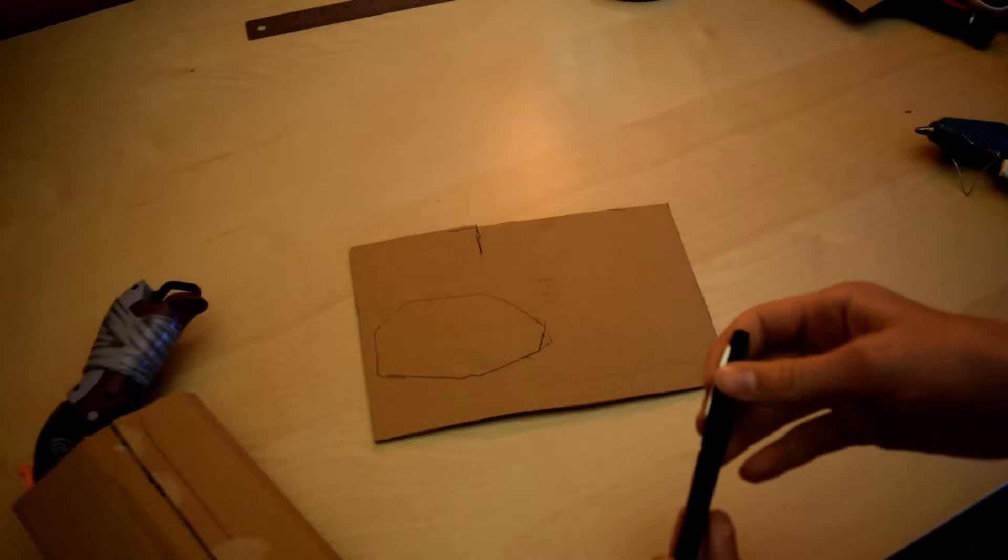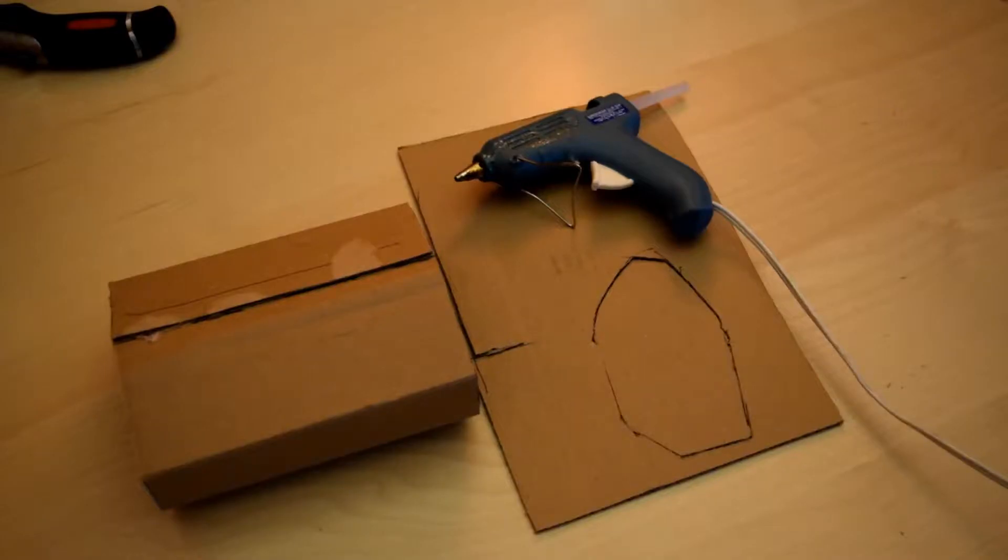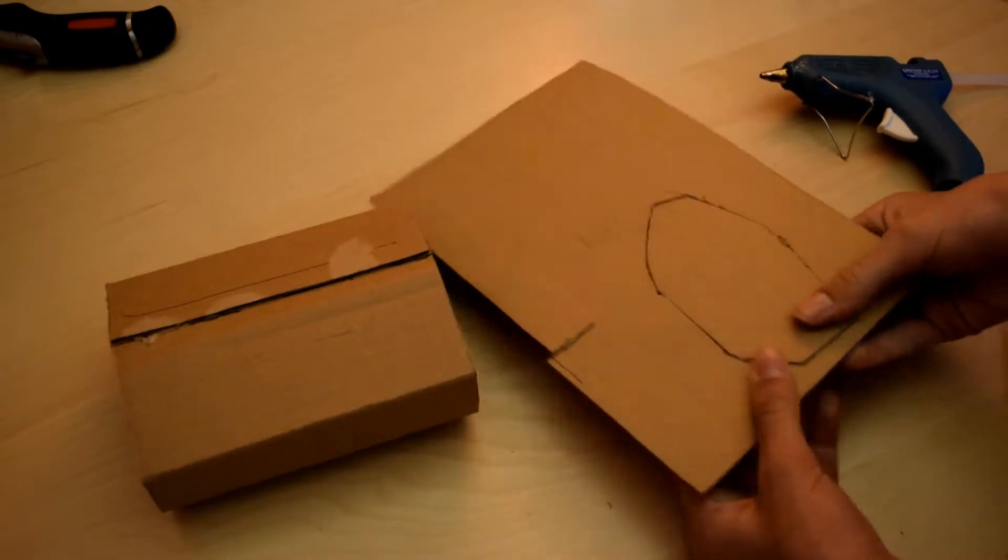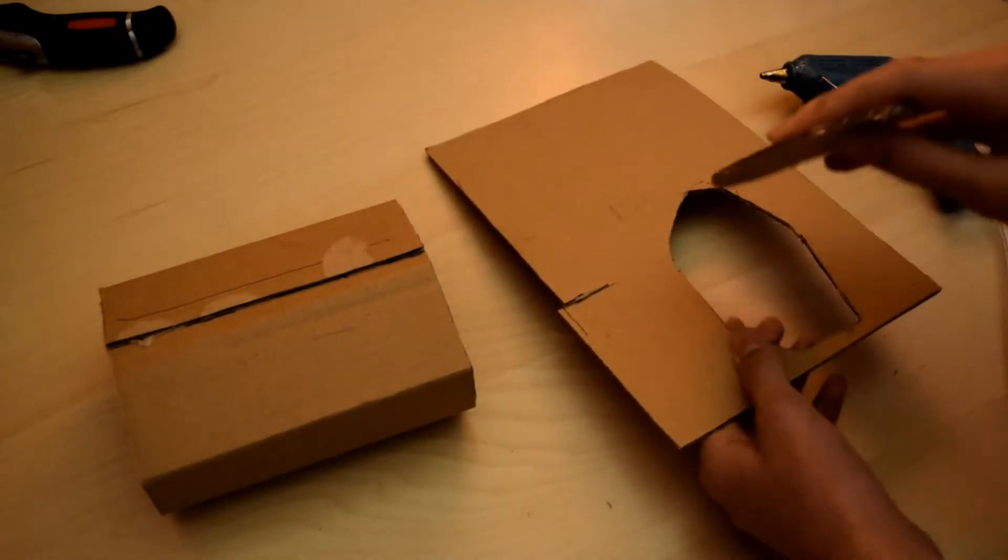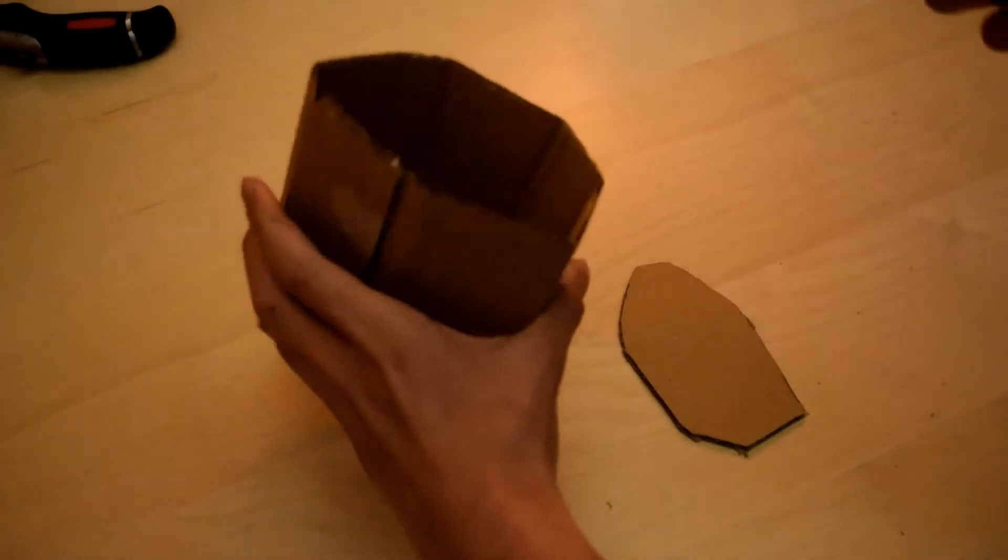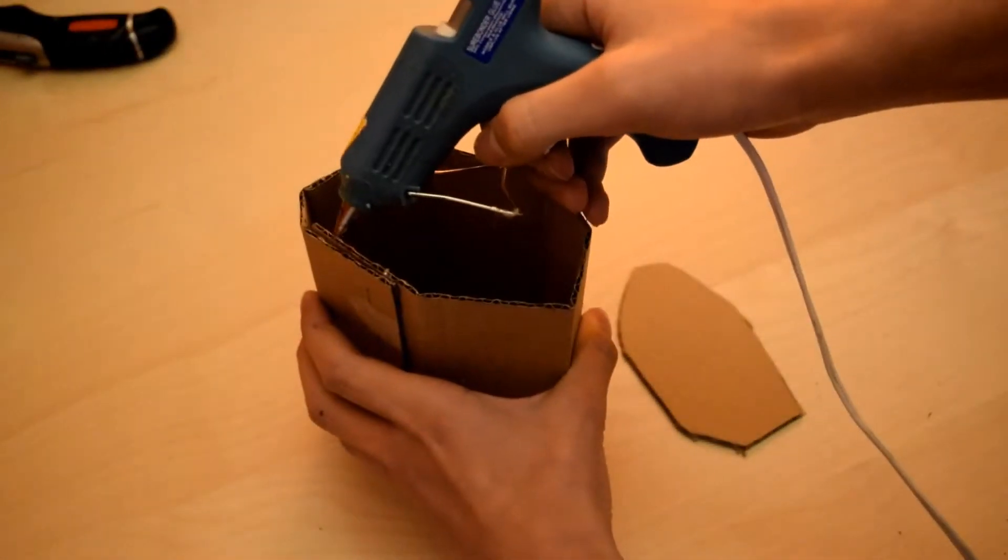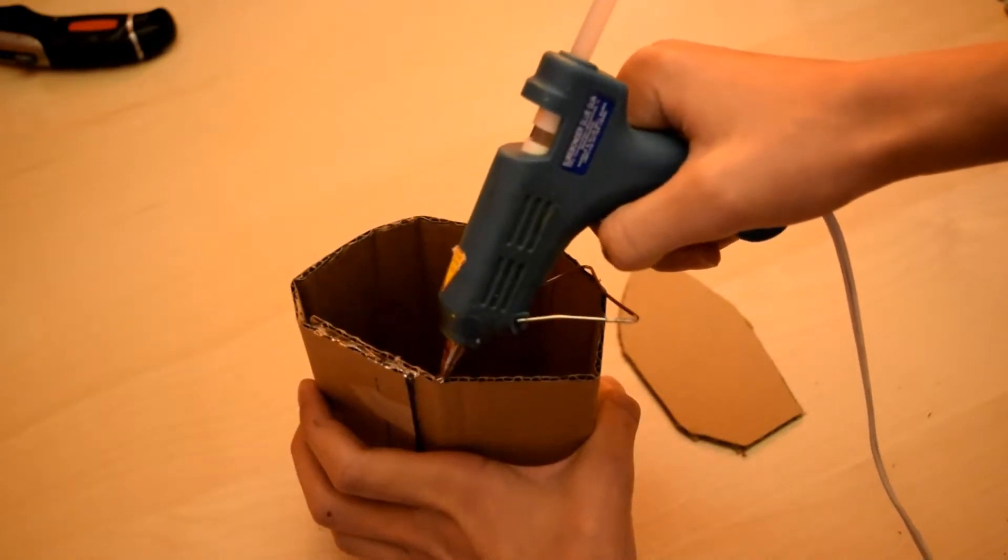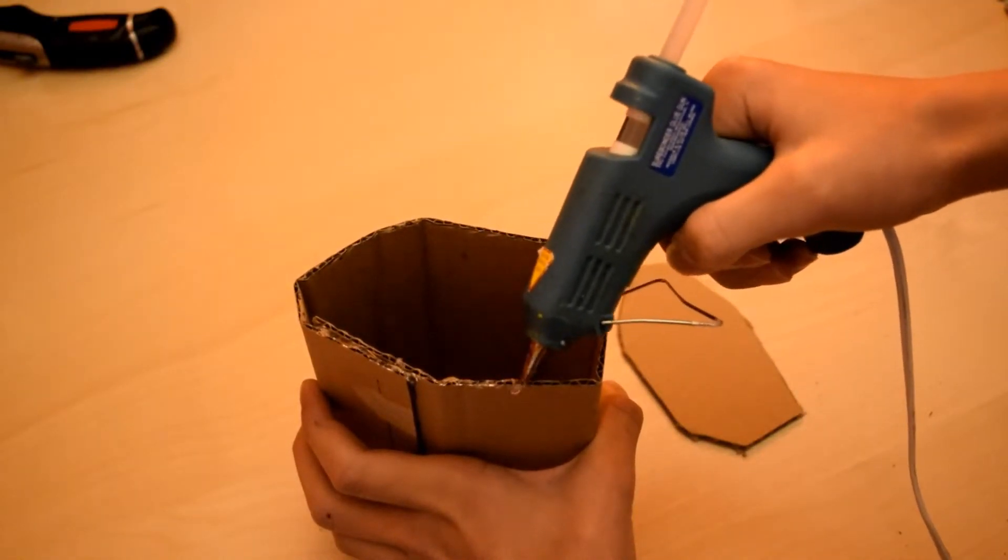Now you're going to cut this out. I prefer using the knife but you can do it with a scissor. Once you've cut out your bottom, it's time to glue it on. Make sure that you put the glue on the same side of the holster as you made the markings on or the bottom won't fit perfectly.